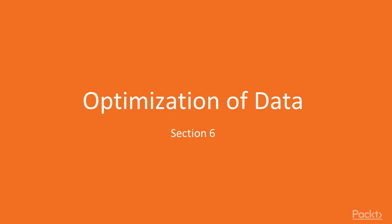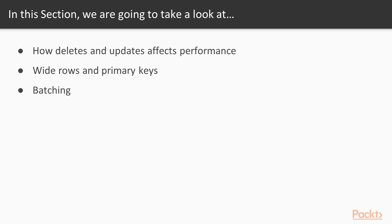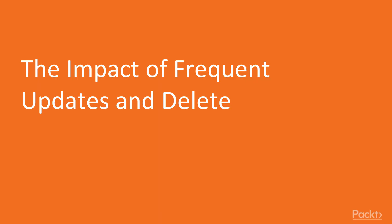Welcome to the sixth section of the Cassandra course. In this section we'll be optimizing our data to be very performant. First we will see how deletes and updates affect performance in Cassandra. Then we will learn to distinguish between wide rows and primary keys, and at the end we'll be looking at batching in Cassandra. This is the first video of that sixth section.